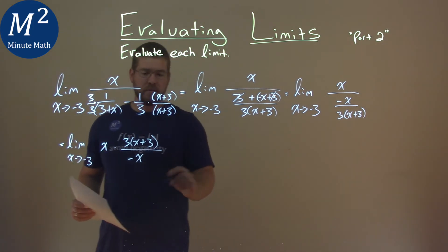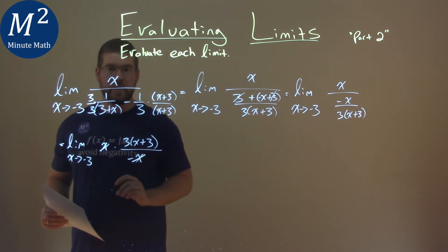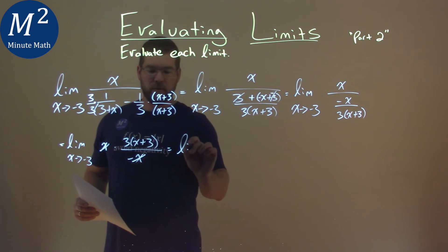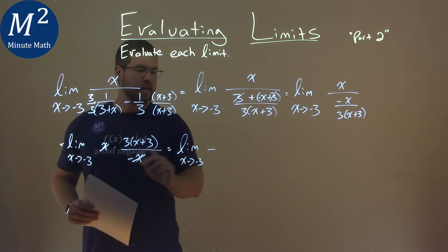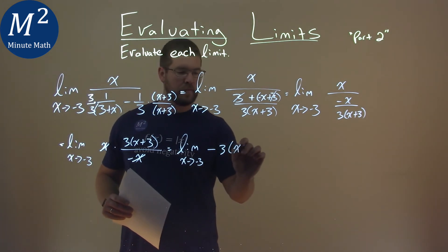And what this allows me to do is cancel out these x values. So we're left with the limit as x approaches negative 3 of negative, don't forget that down here, 3 times (x plus 3).